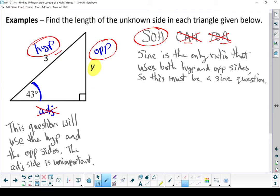All right, let's write our formula down. Sine of theta equals opposite over hypotenuse. Let's put in the pieces we know. In this case, I know my angle, so instead of theta, I'm going to put in that 43 degrees. I don't know my opposite side, so I'm going to put a y in there. But I do know my hypotenuse, so I'm going to put a 3 in there.